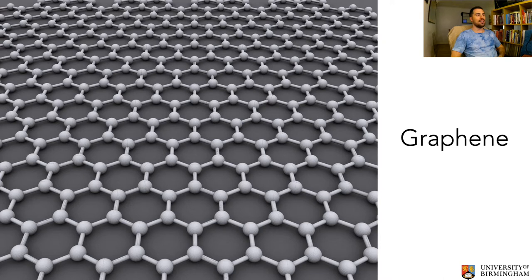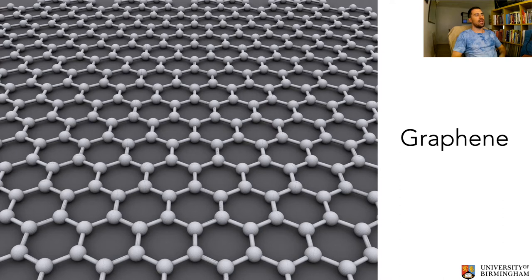Graphene was actually discovered in 2003 by scientists with a very simple experiment. They simply got a block of graphite, not unlike a large pencil — it's called the famous Scotch tape experiment. They got some sticky tape, like sellotape, and kept peeling it off a block of graphite until they were left with just one single layer of graphene. Graphene is a wonder material with very interesting electrical conductivity properties and the ability to be mixed into plastics for flexible structures — for example, flexible electronics such as screens and solar cells.